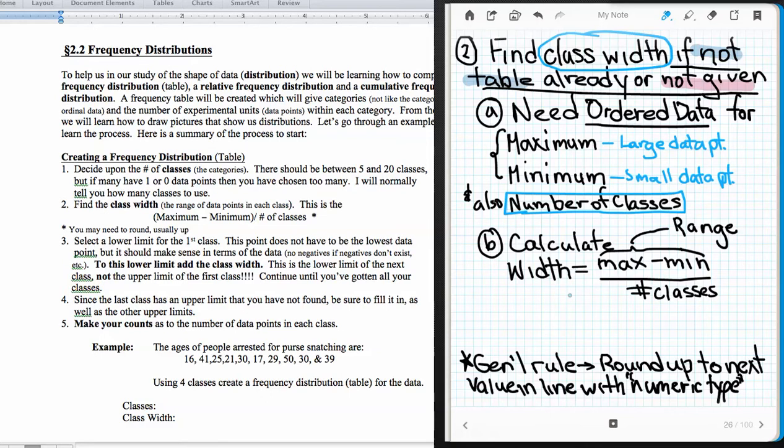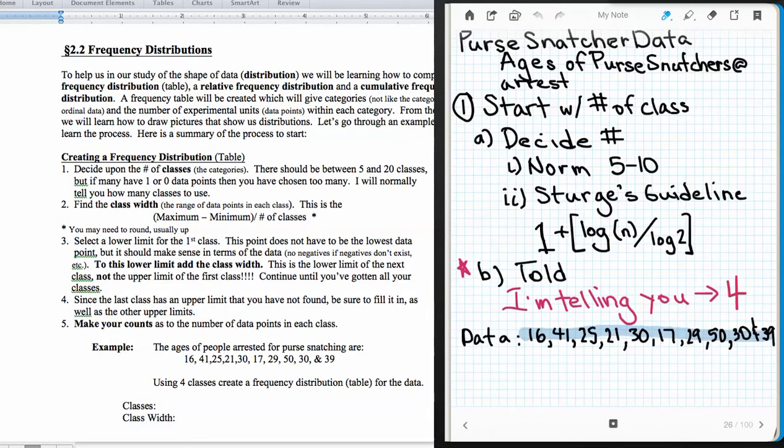And then we're going to calculate this class width by taking the maximum, subtracting the minimum, and dividing by the number of classes. So let's go back to our data, and let's order it. Now this is how I usually order data. I go, okay, what's my smallest one? Okay, 16 is my smallest data point. And I cross it off, so I know I've used it. And then what's my next one? I see a 17. So 17 is my next data point. I cross it off. And then what's my next smallest data point? I see a 21. So 21. And I cross it off.